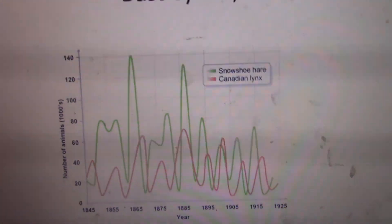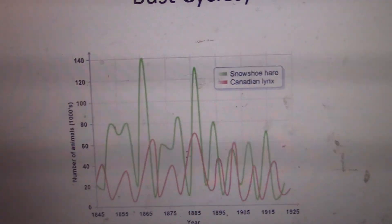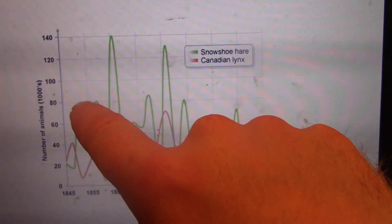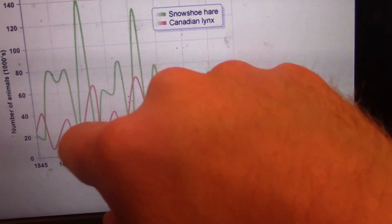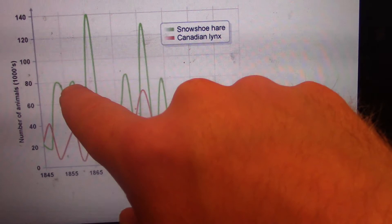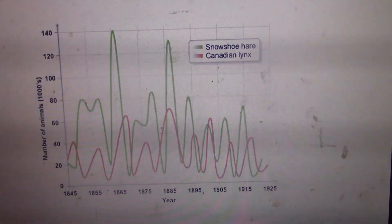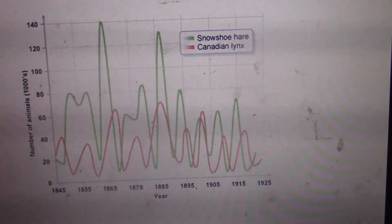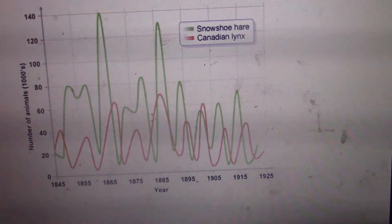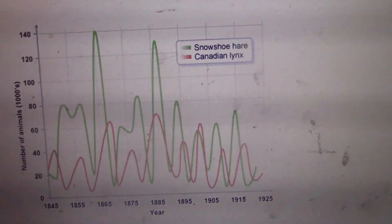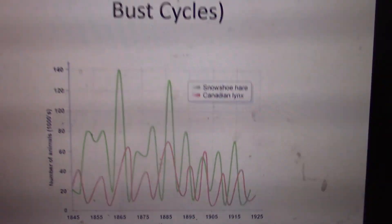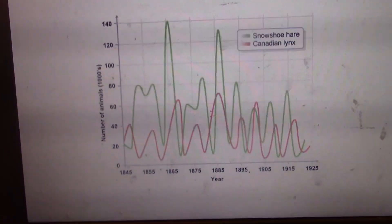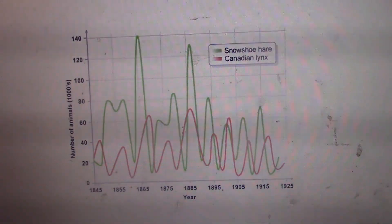Lynx basically exclusively consume snowshoe hares, so if snowshoe hare populations collapse, lynx are done. As snowshoe hare populations rise, after a lag the lynx populations increase as well. But as the predator relationship climaxes, the prey populations collapse — the lynx are eating a lot of prey. There's always more prey than predator, and predator populations mirror prey populations after a lag because the food source must be there for predators to survive. They follow this cyclical pattern — this is co-evolution.